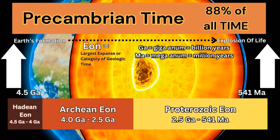Precambrian time is a generic term given to any time in Earth's history before the Phanerozoic and the Cambrian period, which is part of the Paleozoic era, which is part of the Phanerozoic Eon. Eon is the largest time division we have for geologic time, and Precambrian time covers 88% of all of Earth's history — 88% of that 4.54 billion years — because it means before, or prior to, the Cambrian period.